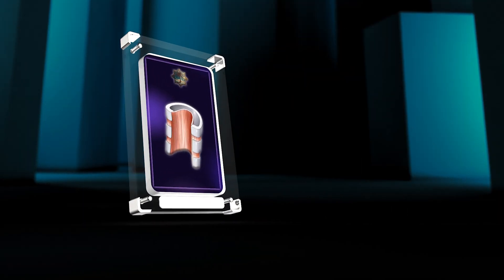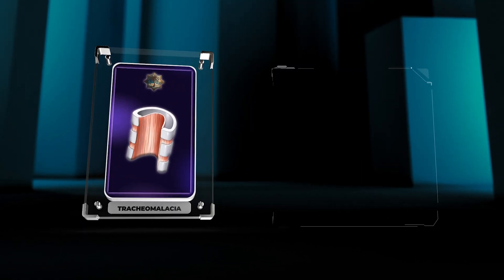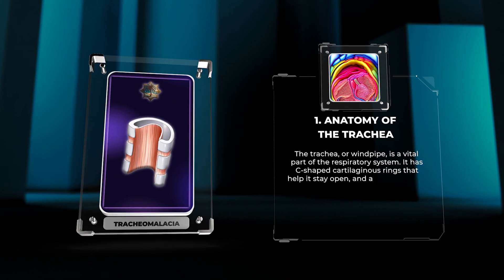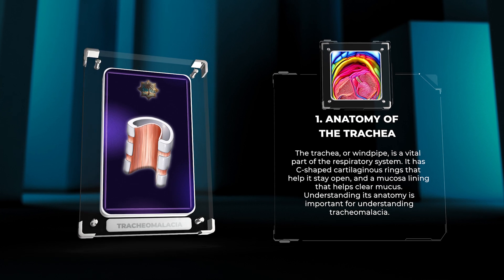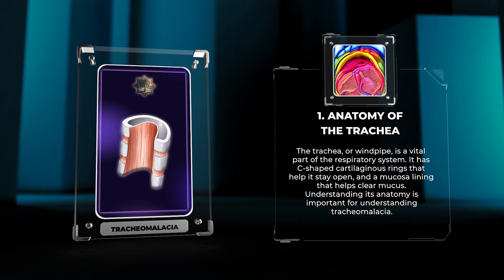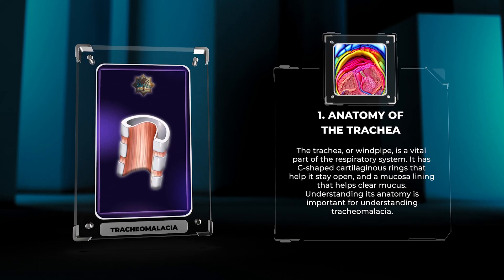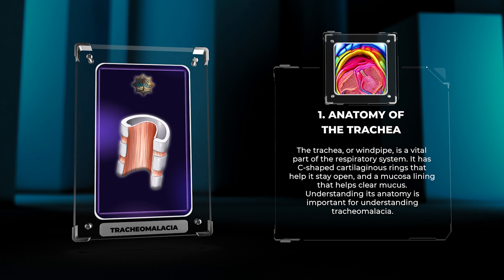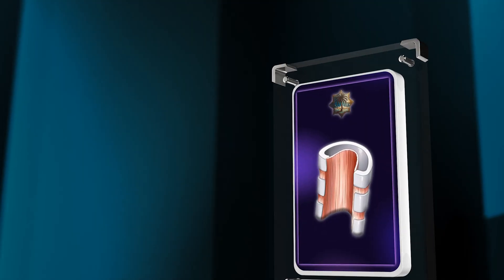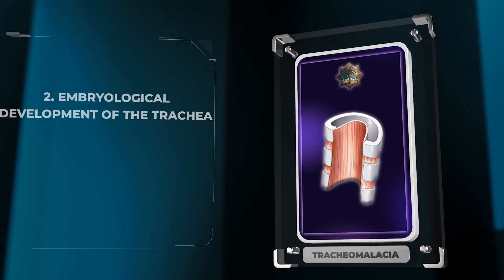The trachea, or windpipe, is a vital part of the respiratory system. It has C-shaped cartilaginous rings that help it stay open, and a mucosa lining that helps clear mucus. Understanding its anatomy is important for understanding tracheomalacia.